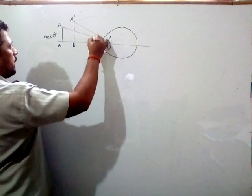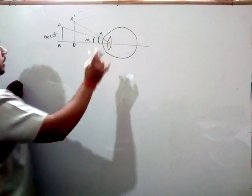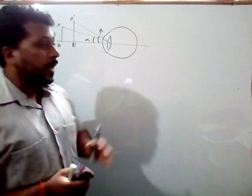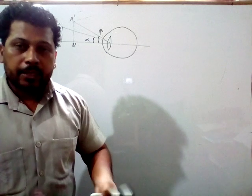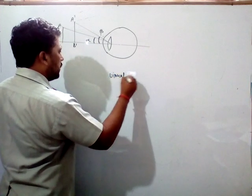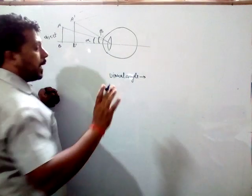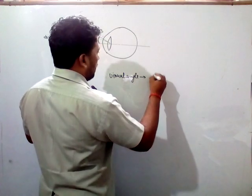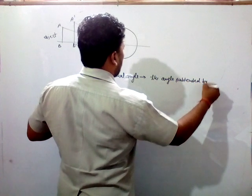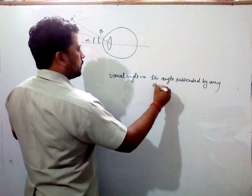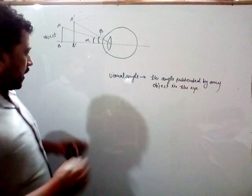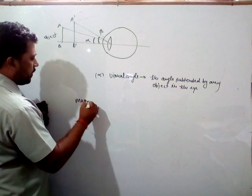The visual angle is the angle subtended by any object in the eye, which is known as the visual angle — that is alpha. Here this is the object and this is the image, with the objective angle alpha and beta as shown.